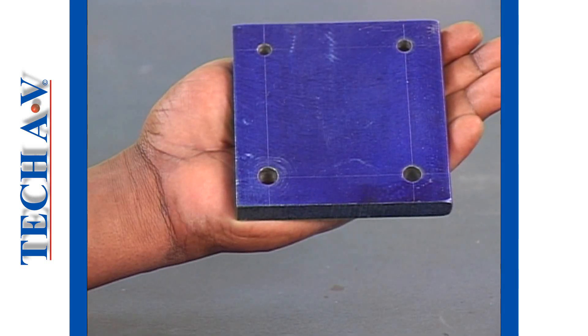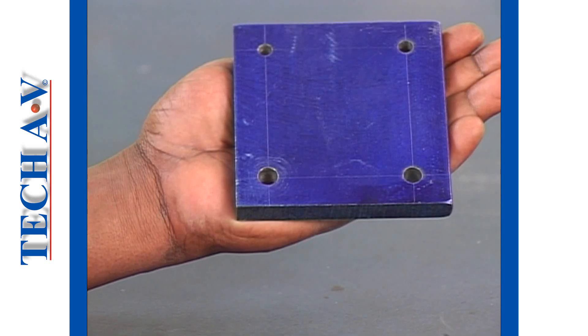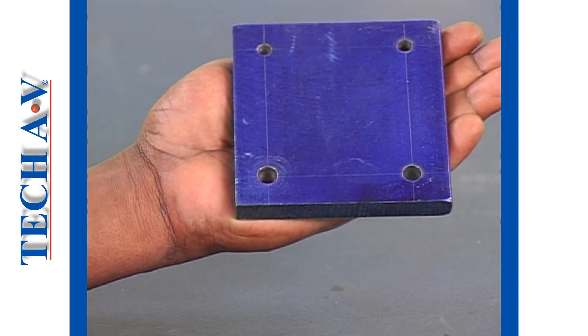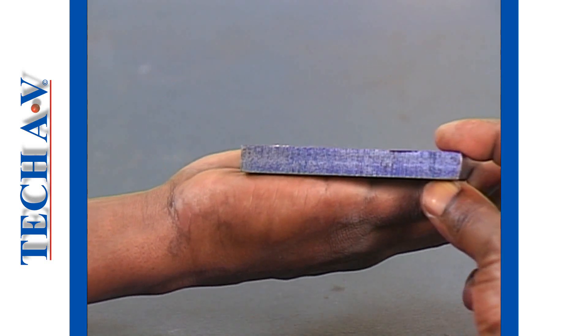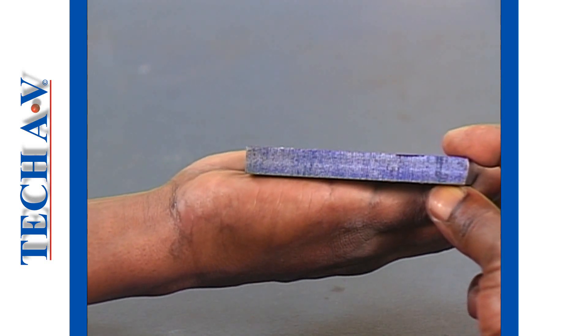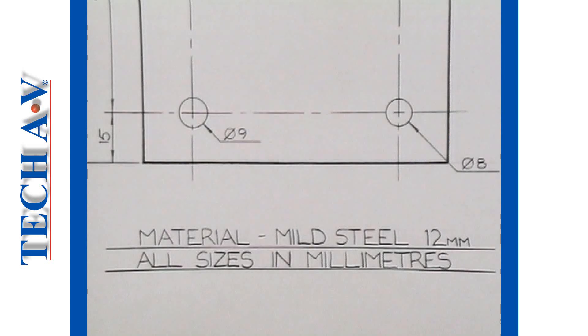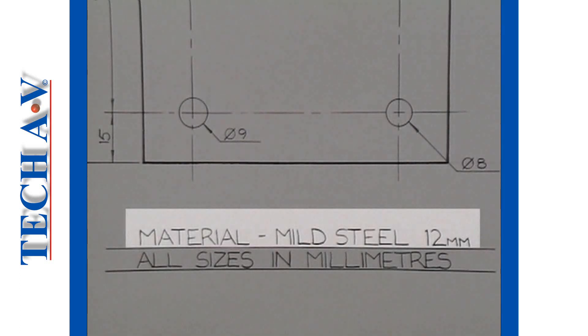For example, our metal workpiece here is to be made out of mild steel plate. The thickness of the plate is 12 millimeters, which is standard or stock size. On our simplified drawing, this information is given in writing, as you see here.